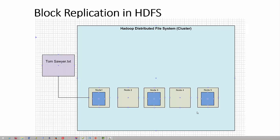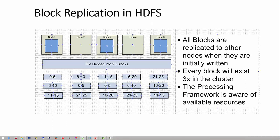The block written on node 1 is copied to node 3 and node 5, which means every block in the cluster will have three replicated copies. In this example, a file is divided into 25 blocks and the blocks are distributed across the cluster. For each block, two further copies are made to other nodes, as per the cluster's replication settings.